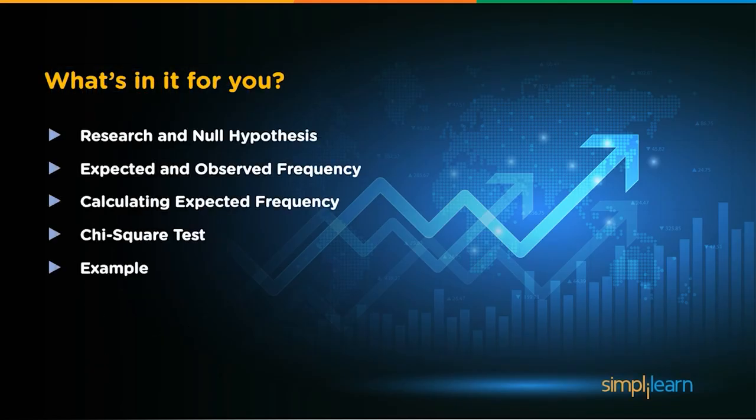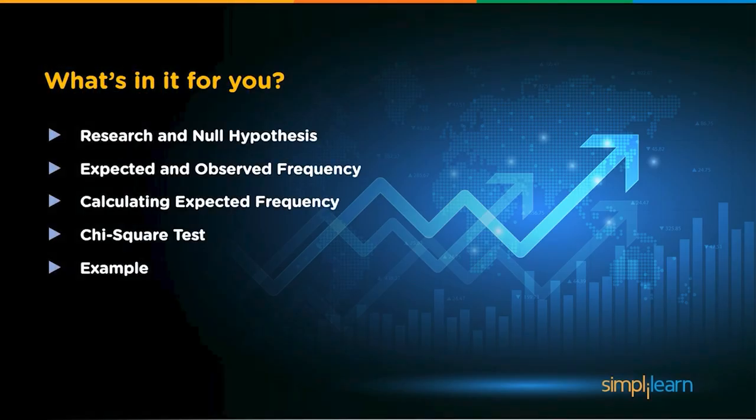We will start by defining what is research and null hypothesis. Then, we will move on to learn about observed and expected frequencies. You will see how you can calculate the expected value using a formula. Then, we will move on to chi-square statistics. We will learn its limitations, its formula and its basic concept. After grasping every theoretical knowledge, we will discuss an example step by step to see how you can calculate the chi-square statistics and the conclusion you can draw from the calculated value. So, let's get started.